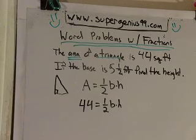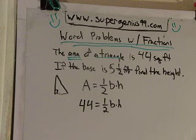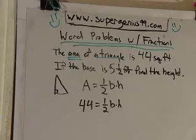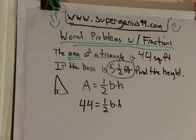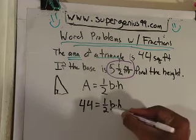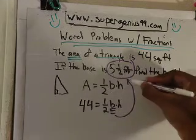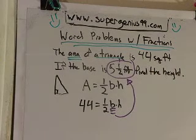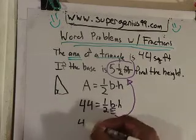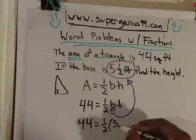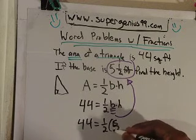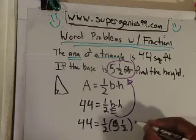What else can we get out of this sentence? We know the area is 44. We also know the base is how much? The base is five and a half feet. So the base is five and a half, that means I can replace this b right here with five and a half. So now I got 44 is equal to one half times five and a half times height.